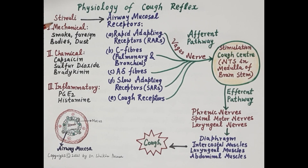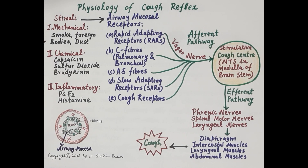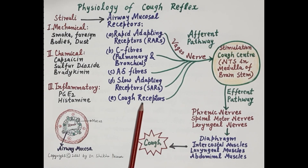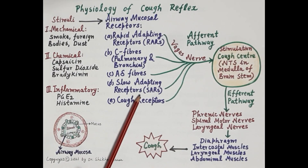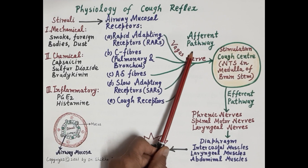Irritants such as dust particles are inhaled, pass along with the air, and reach the respiratory mucosa, where they stimulate the airway mucosal receptors. These stimuli can be mechanical — for example, smoke, foreign bodies, and dust — or chemical, like capsaicin, sulfur dioxide, and bradykinin. They can also be inflammatory, such as prostaglandin E2 and histamine. Thus, these unwanted stimuli reach the mucosa and activate the airway receptors.